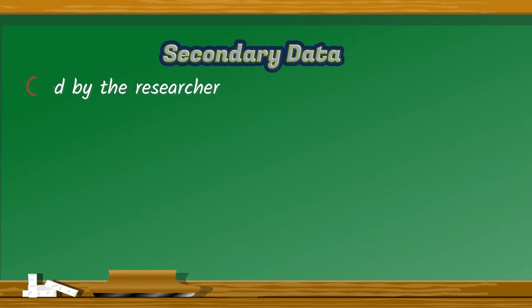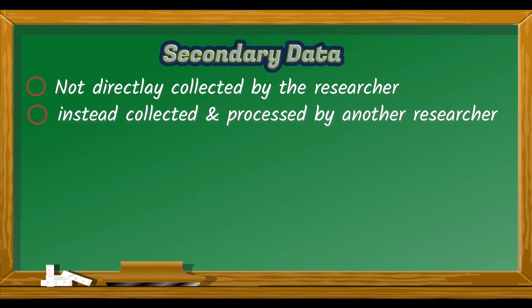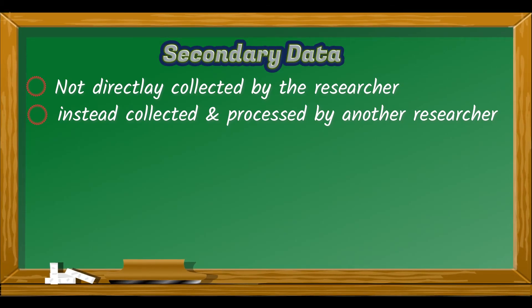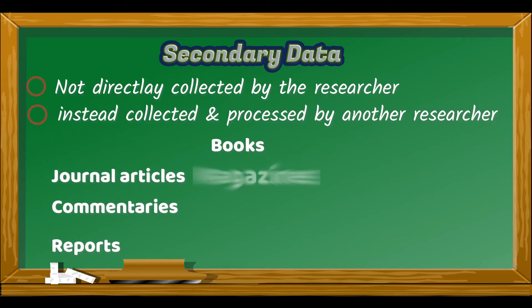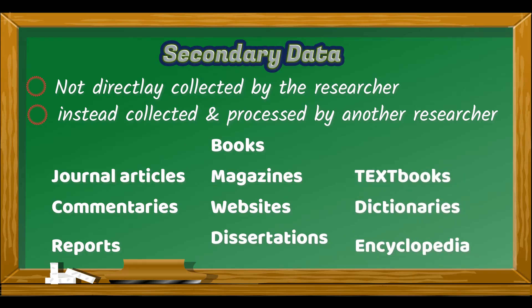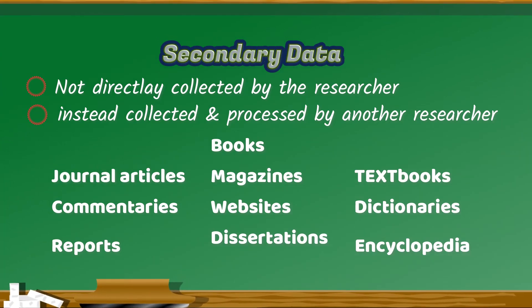If the data is not collected directly by the researcher himself or herself — instead, he or she is using data that has been collected and processed by someone else — such data is known as secondary data. Sources of secondary data include books, journal articles, commentaries, reports of different organizations, magazine or newspaper articles, websites, textbooks, dictionaries, encyclopedias, dissertations, etc.